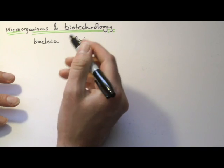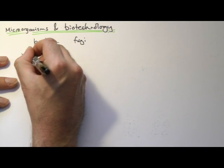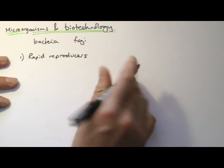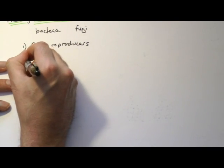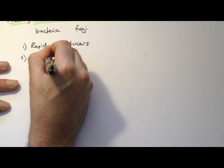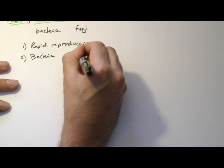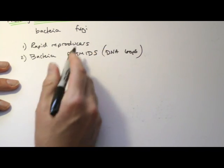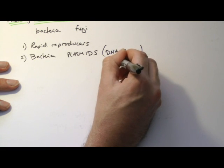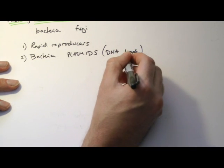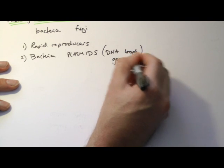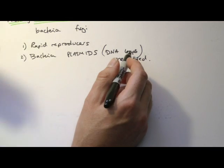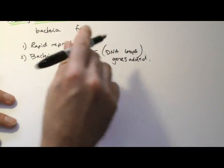Now there's quite a few advantages to biotech. They're very rapid reproducers, so you can make lots of them pretty quickly. In terms of bacteria, they have these little loops called plasmids, DNA loops, and what's so good about them, we can insert genes in. Remember that idea of gene modification, genes added, and so we can engineer bacteria to make things that we want them to make.